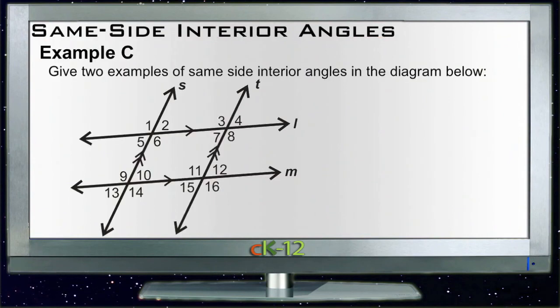Okay, let's take a look at Example C. Example C says give two examples of same-side interior angles in the diagram below. Well, I see about a million of them actually. All right, two examples of same-side interior: we have 5 and 9, they would equal 180.